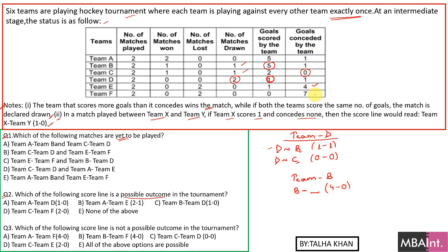This 4-0 win for team B can only happen when it plays team E or team F. Observing team E — it has lost both its matches, meaning it must concede at least one goal in each match, so it cannot concede all four of its goals in just one match against B. This makes it clear that team B's other match is against team F, and it is a 4-0 win for B.